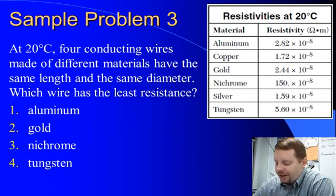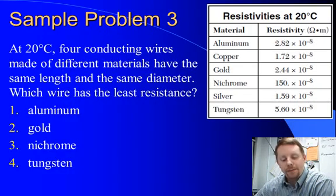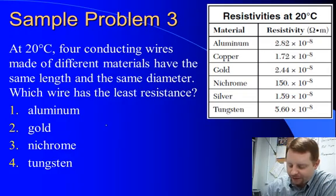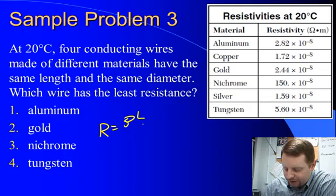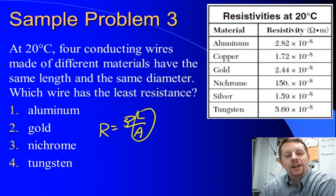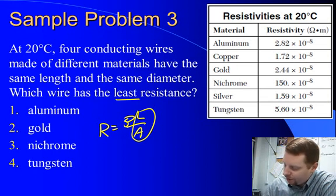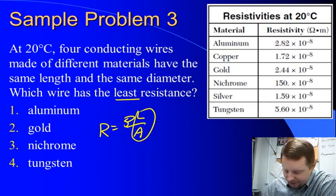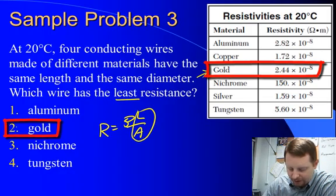Here we have a table of resistivities at 20 degrees Celsius for different materials. It says at 20 degrees C, four conducting wires made of different materials have the same length and same diameter, which has the least resistance. So if they all have the same length and same diameter, if we're looking for resistance, that's rho L over A. Same length and diameter means that's the same in all of them. The only thing that changes is resistivity. So if we want the least resistance, we want the least resistivity. That must be our smallest resistivity from the table, which in this case is going to be gold, number 2: 2.44 times 10 to the minus 8.